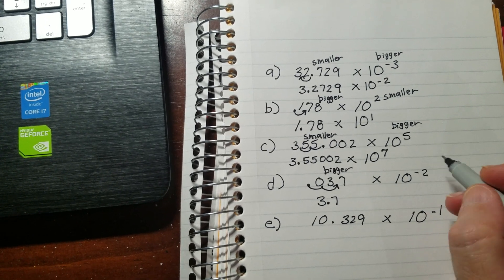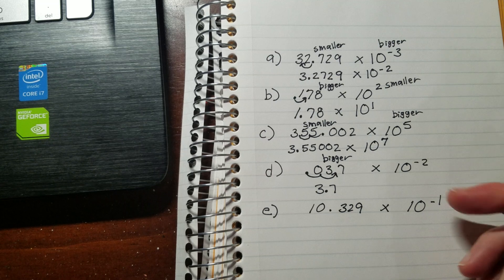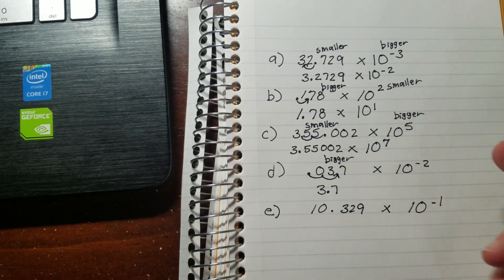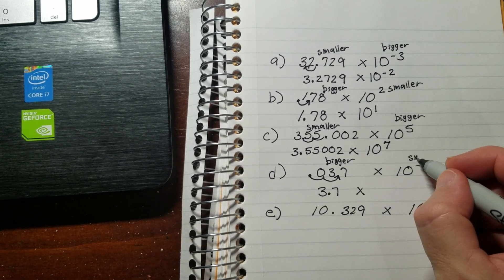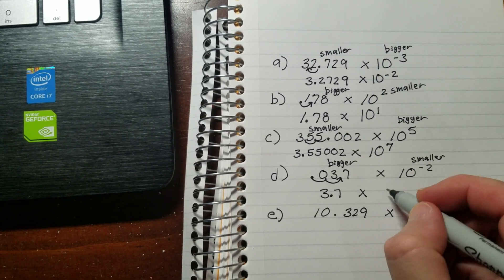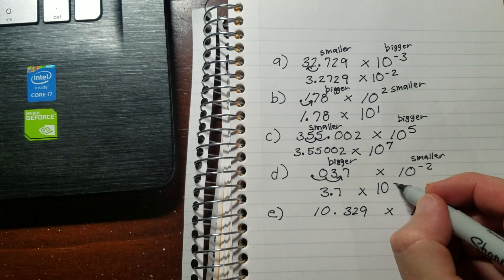So again, remember with negatives to be careful, because a lot of times people go, oh, 2 smaller, that'll make it 0. Actually, 2 smaller is going to be negative 4. So I've got to make this smaller. So 10 to the negative 4.